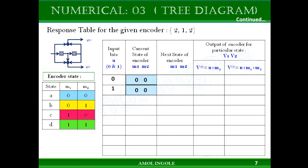The initial state of the encoder is 0,0. We will start with state 0,0 and consider possible input bits 0 and 1. For every state you consider 0 and 1 as possible inputs, determine the next state, and find the corresponding v1 and v2 outputs. If the current state is 0,0 and input is 0, this 0 is shifted into m1 and m1 is shifted into m2, giving next state 0,0. When the initial state is 0,0 and input 1 is given, the next state is 1,0.